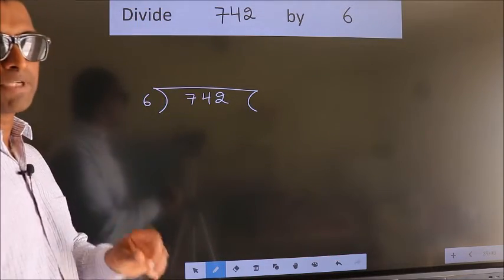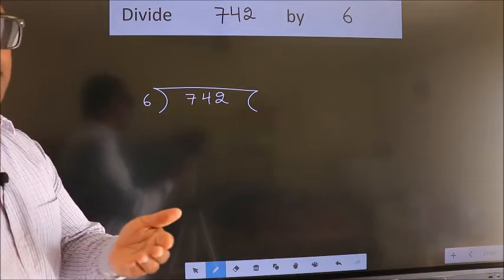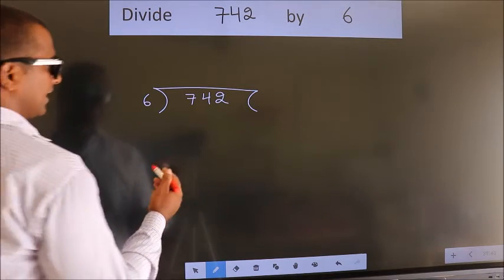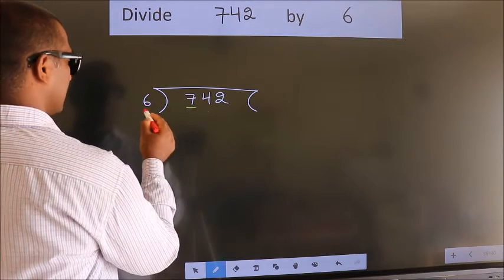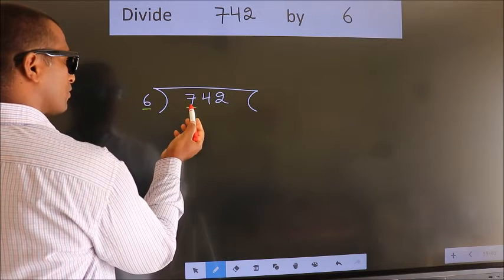This is your step one. Next, here we have seven. Six, a number close to seven in the sixth table, is six ones six.